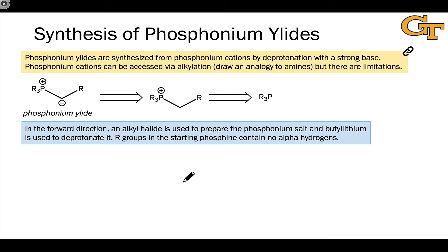In the last video on the Corey-Czajkowski epoxidation, we noted that the most common way to synthesize ylides is by deprotonating their conjugate acids, and the same is true of phosphonium ylides, which are the key intermediates of the Wittig reaction.